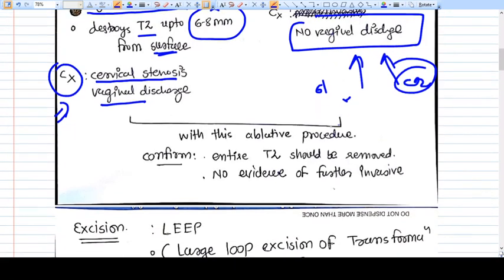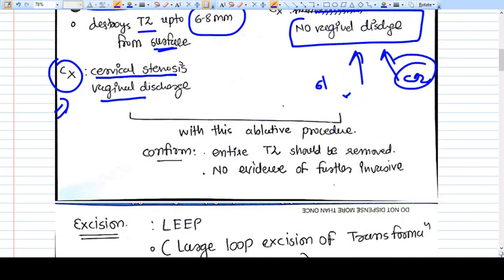Once we have done the ablation of the tissue, we want to confirm that entire abnormal tissue or entire neoplastic tissue is removed or not. But we don't have HP examination possibility in ablative methods because we don't get the tissue which can be examined under microscope. So we should visually confirm that the entire TZ should be removed and no evidence of further invasion.